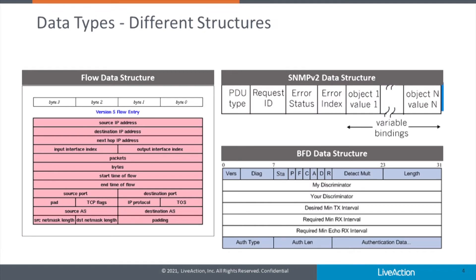Let's go a little deeper into the variety of data formats that we're dealing with. Here you can see the data structure for standard flow information on the left, standard V2 SNMP, and BFD data used in SD-WAN. Each of these data structures has a very different format, length, and dataset. Additionally, the volume of information created with each of these data types is very different. LiveAction responded to this challenge and decided to manage the collection and processing of this data with separate data stores, each adapted to its purpose.